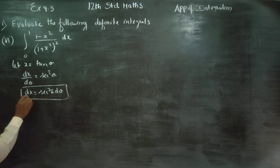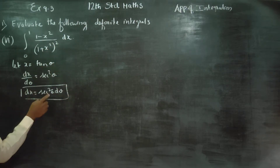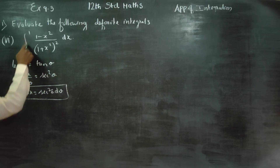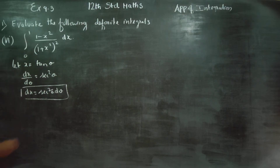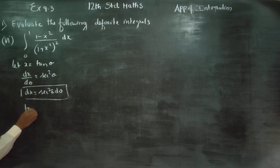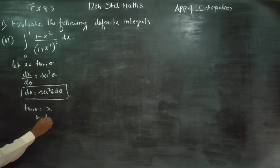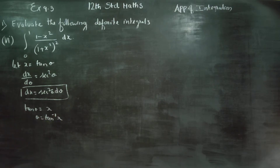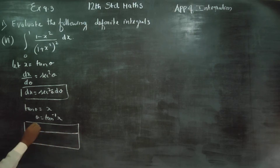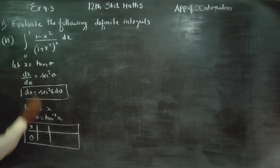We have substituted dx. Now we need to substitute x and also change the limits. Since tan theta equals x, theta equals tan inverse of x. The limits are in terms of x: x goes from 0 to 1, so we convert to theta.